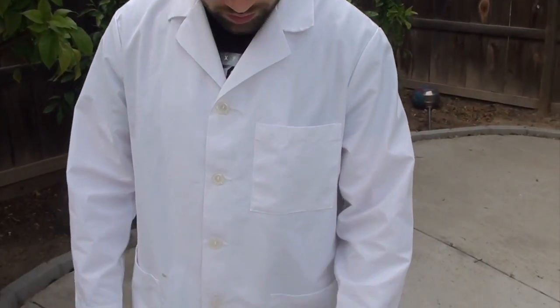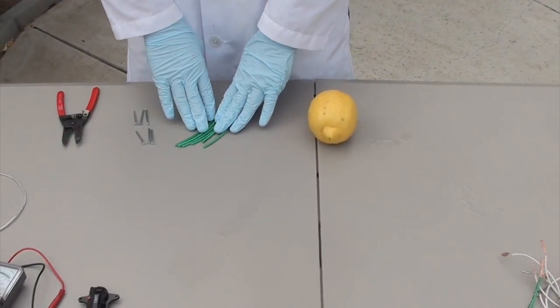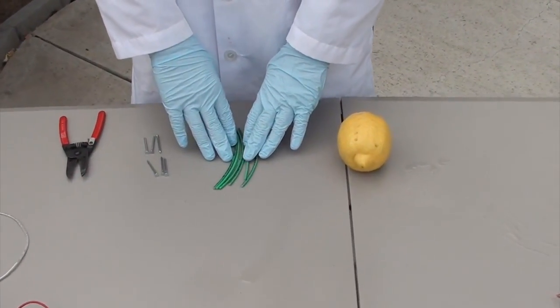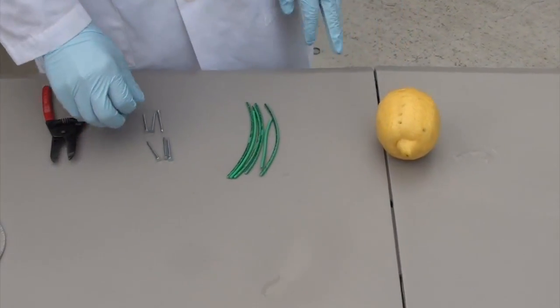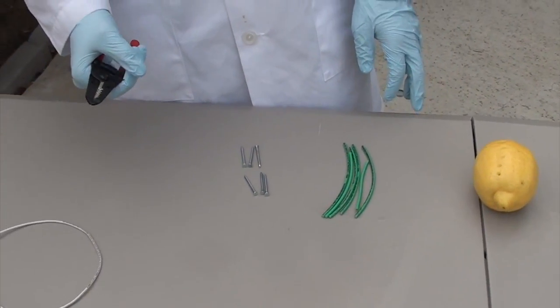To start the experiment we are going to need one lemon, six insulated threaded copper wires, and six zinc nails with a wire cutter.